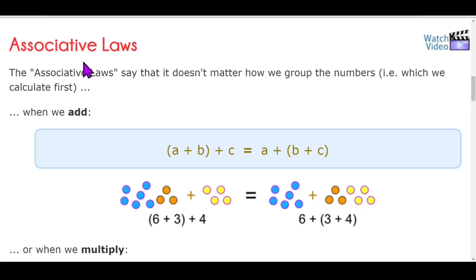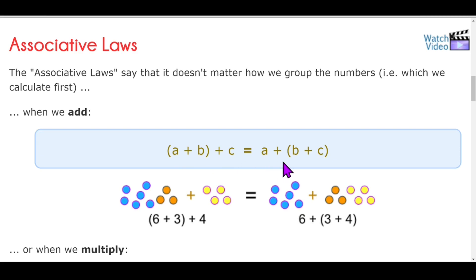Our second law is the associative law. This property gets its name from the word 'associate' and refers to the grouping of numbers. The associative law states that it doesn't matter how we group the numbers — when three or more numbers are added or multiplied, the sum or product is the same regardless of the grouping of the addends or multiplicands. That means (a + b) + c equals a + (b + c).